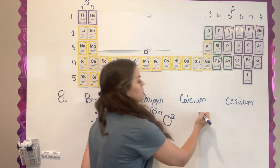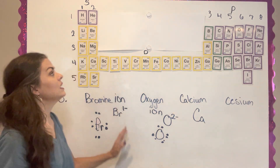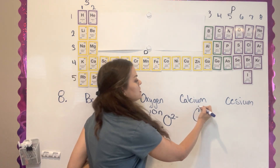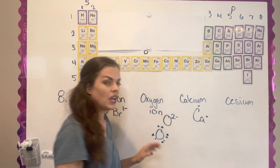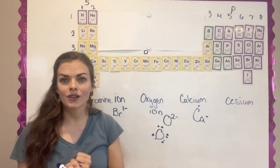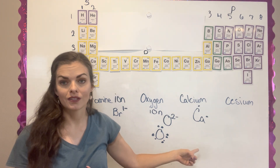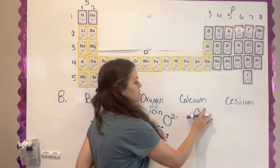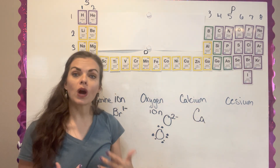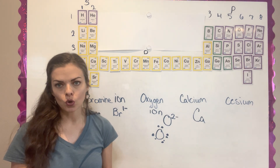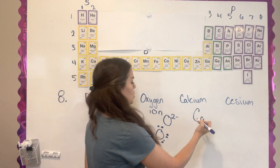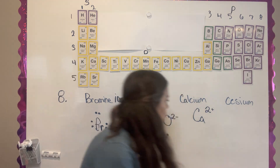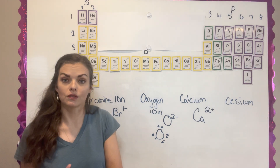Let's look at calcium. A calcium ion — calcium only has two valence electrons, so it has these two electrons out here. It can either pull in six electrons or give away its two valence electrons, and it's actually a lot easier to give away two. When we write that as losing two electrons — two negative charges — we write a two positive, because it's lost two negative charges and becomes a positive charge.